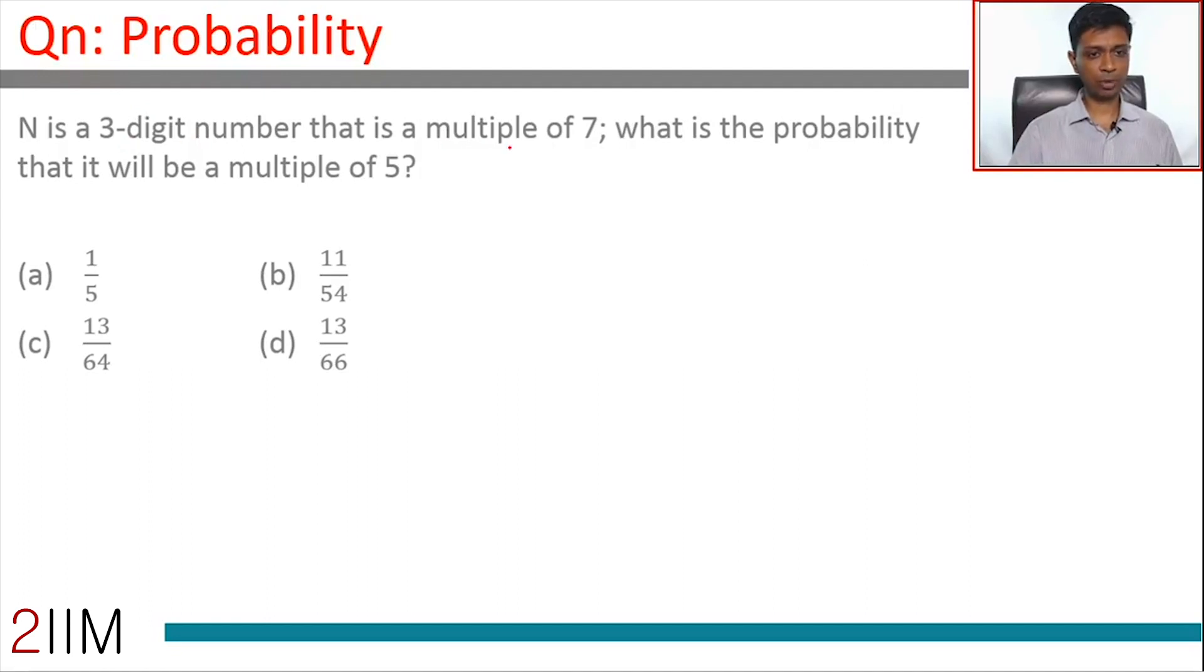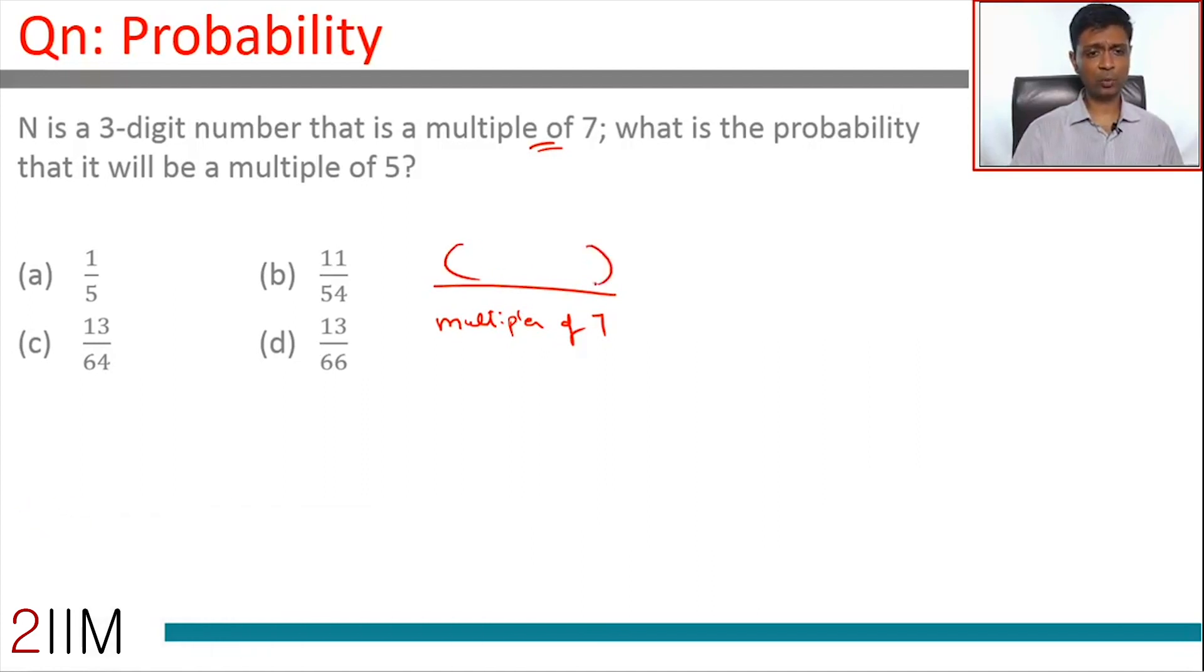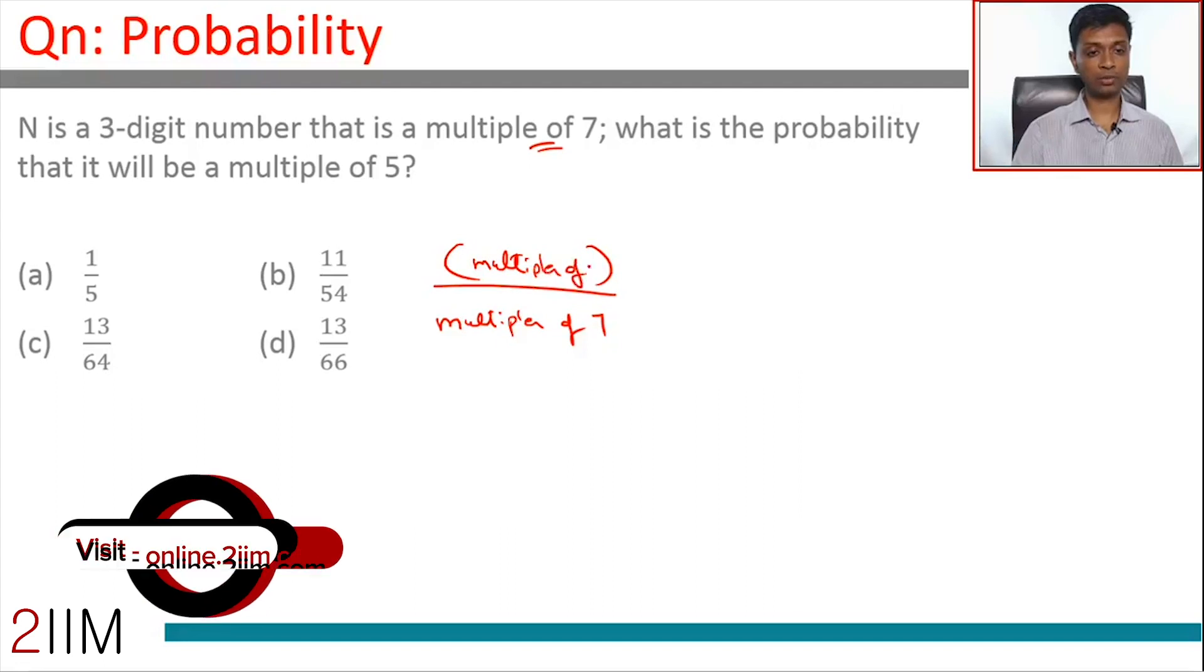N is a three-digit number that is a multiple of 7. What is the probability that it will be a multiple of 5 as well? Quite simply, we need to consider all three-digit multiples of 7. The number of three-digit multiples of 7 will sit in the denominator. Within this, which numbers are multiples of 5 as well? That is what we need to consider.